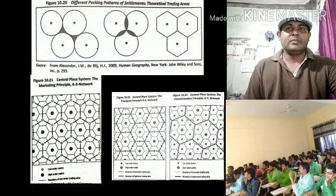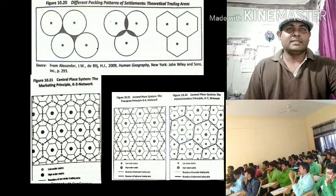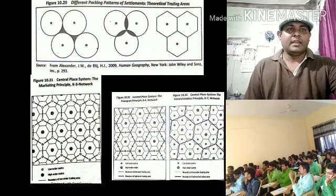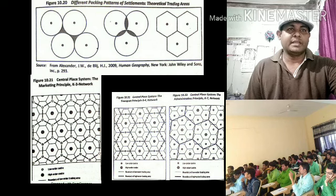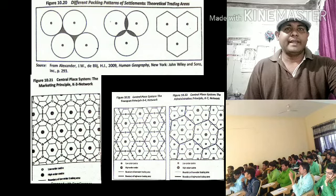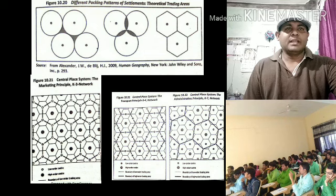The criticisms of the theory are as follows: first, the isotropic surface is rarely found in the real world except in a few plain areas. Second, the behavior of human beings is not always rational — man is not always an economic person in the decision-making process. Third, the pattern of central places is rarely found in the real world, as the rapid growth of population and higher degrees of urbanization are destroying traditional patterns of settlement.